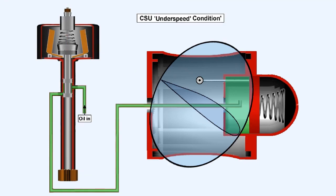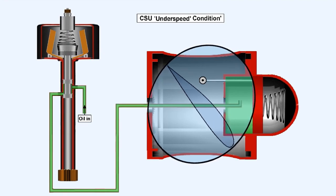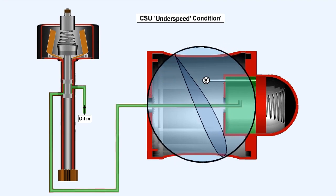If the propeller is under-speeding, then the flyweights will be leaning inwards, because of the reduced centrifugal force, allowing the speeder spring to push the landed valve downwards. This will allow the unit to supply oil to fine off the pitch of the propeller, causing an RPM increase.